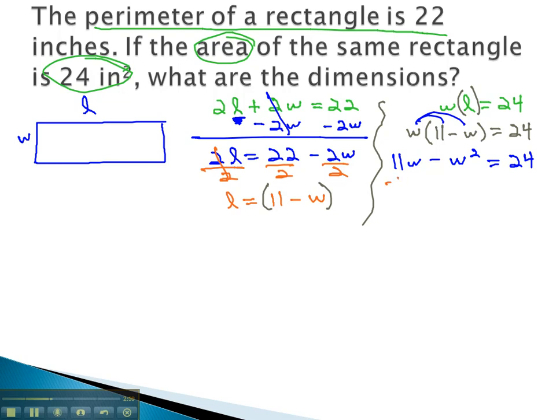We can make it equal to 0 by subtracting 11W and adding W squared from both sides. This makes the W squared positive, and we have 0 equals W squared minus 11W plus 24.